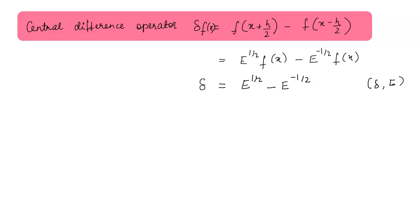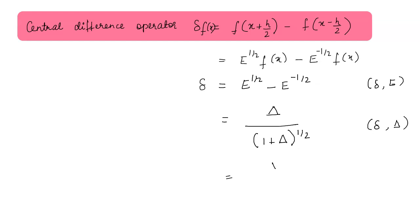Similar to this, we have another relation: δ equals the forward difference operator Δ divided by the square root of (1 + Δ). And another relation in terms of the backward difference operator: δ equals ∇ divided by the square root of (1 - ∇). These are the relations between the central difference operator and the forward and backward difference operators respectively.